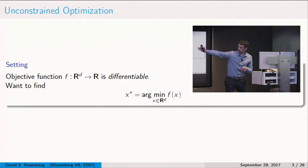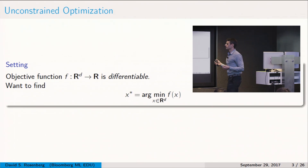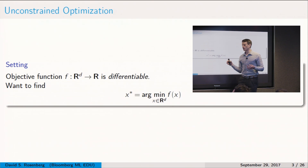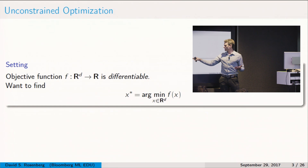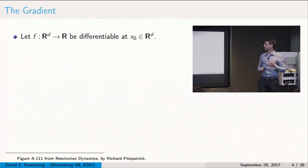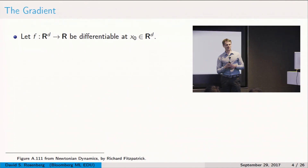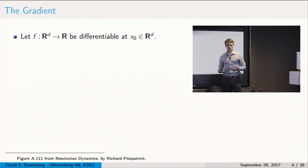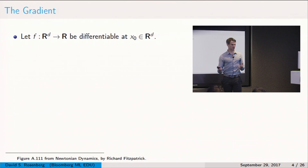Gradient and stochastic gradient descent are the topics of our next module. Eventually our goal is to minimize the empirical risk. More generally, suppose we have an objective function f from R^D to R, suppose it's differentiable, and we want to find the x that minimizes f.